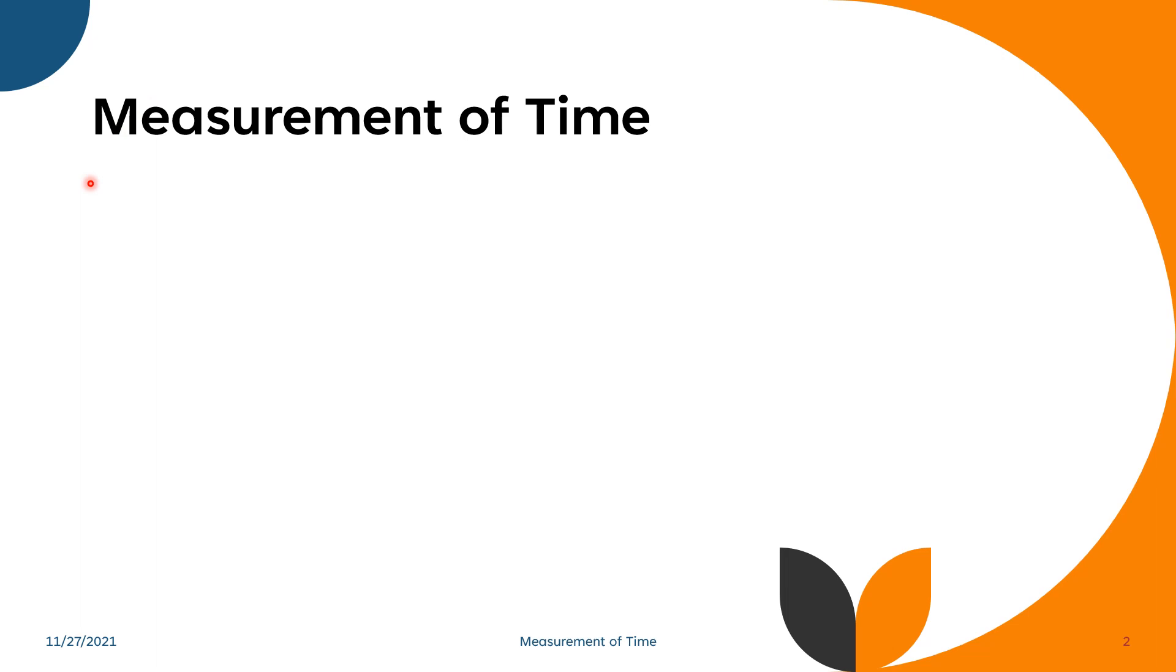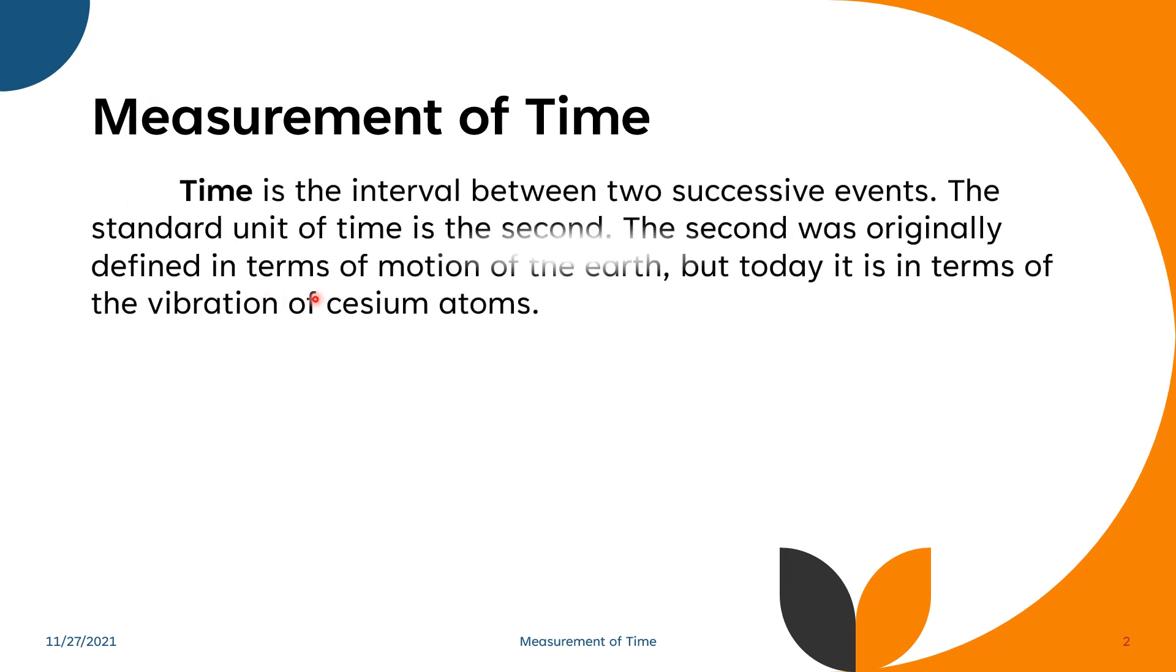Measurement of time: Time is the interval between two successive events. The standard unit of time is the second. The second was originally defined in terms of motion of the earth, but today it is in terms of the vibration of cesium atoms.